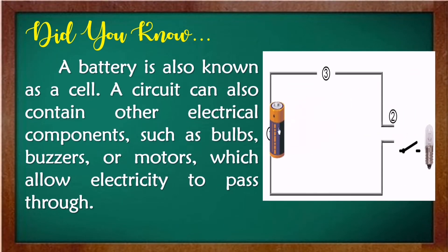A battery is also known as a cell. A circuit can also contain other electrical components such as bulbs, buzzers, or motors which allow electricity to pass through.